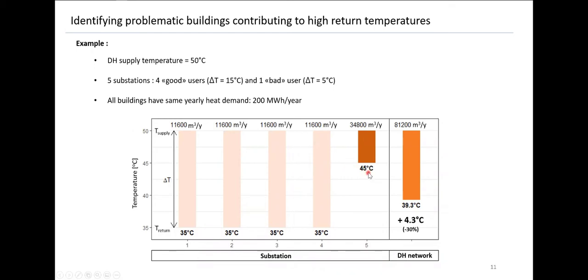In this example, only this one bad substation causes the average mixed return temperature of all five substations to be 39 degrees — more than four degrees higher than it would otherwise be. So one substation can have a substantial effect, as we will also see in the case study.